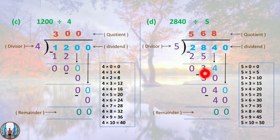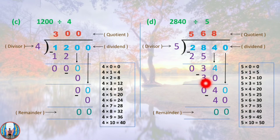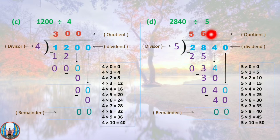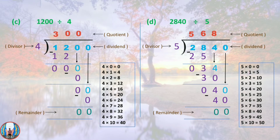We write 30 here. 5 sixes are 30, so we write 6. Now 34 minus 30 gives remainder 4. Bring down the 0. 5 eights are 40, and 40 minus 40 equals 0. So the quotient is 568 and the remainder is 0.